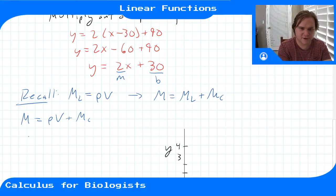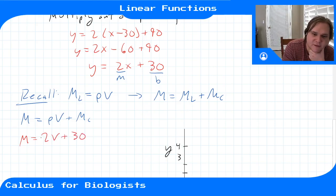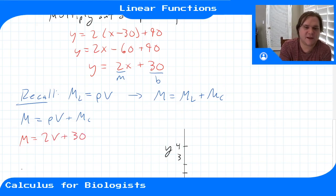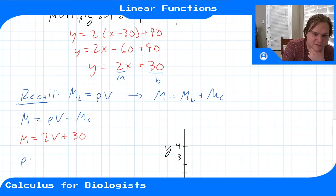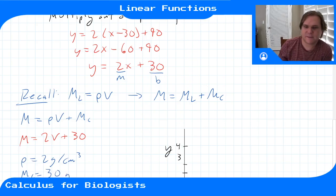And so in our problem, we had y is equal to 2x plus 30. So that's saying that our density is 2 grams per centimeter cubed. And the weight of the container, mc, is going to be 30 grams.